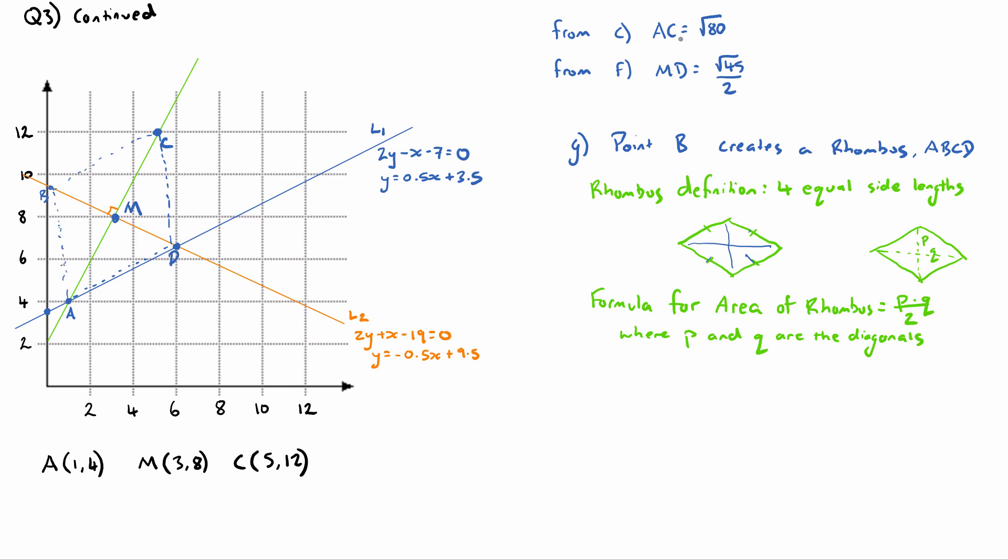In prior questions, in Part C we found the distance from A to C, which is one of the diagonals. Let's create the formula here: Area equals AC times BD divided by 2.